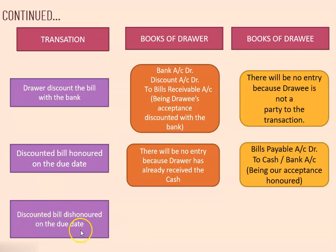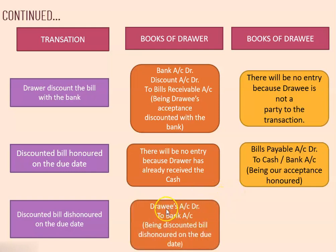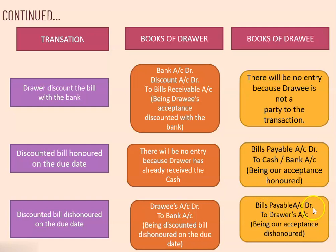Now, discounted bill dishonored on the due date. This bill which was discounted with the bank is dishonored — meaning after the period of the bill, the drawee is unable to do the payment. In the drawer's book, the journal entry is: drawee's account debited to bank account — because the drawee again becomes a debtor and the bank is the giver of the bill. In the drawee's book, bills payable account is debited to drawer's account — being our acceptance dishonored on due date.